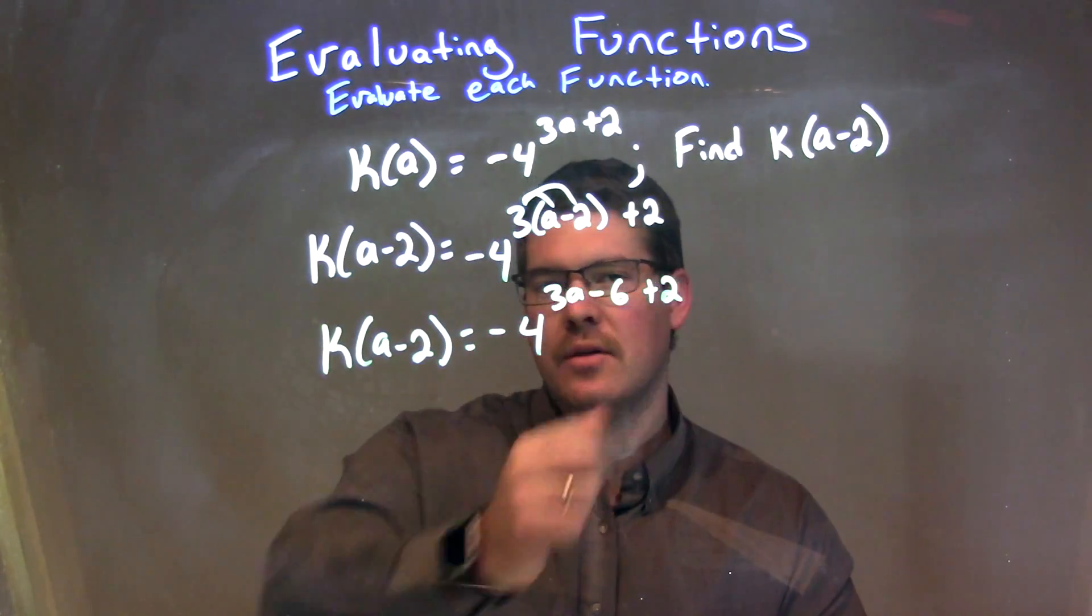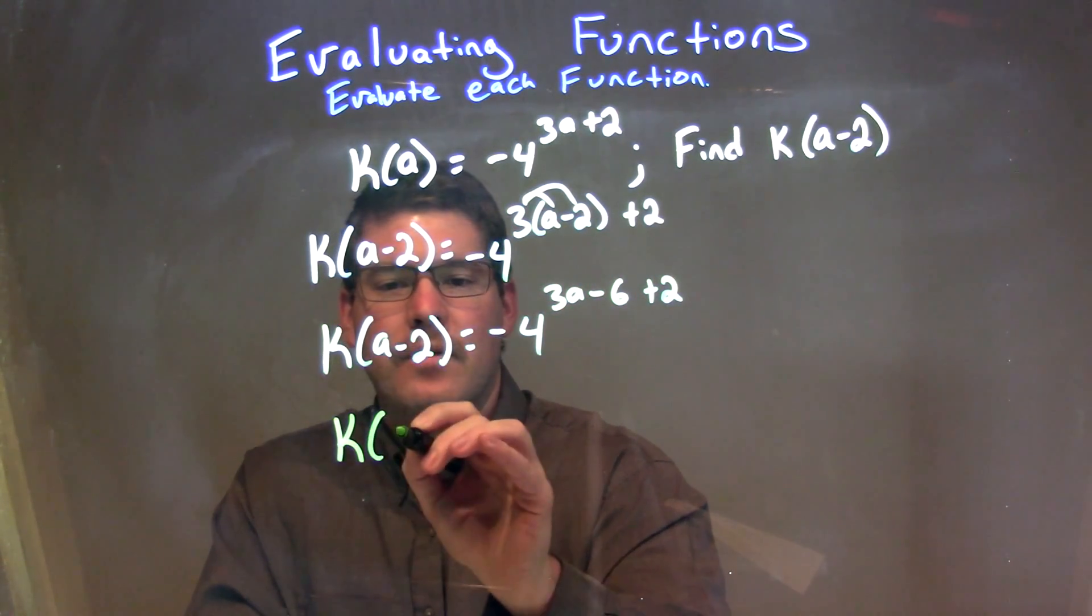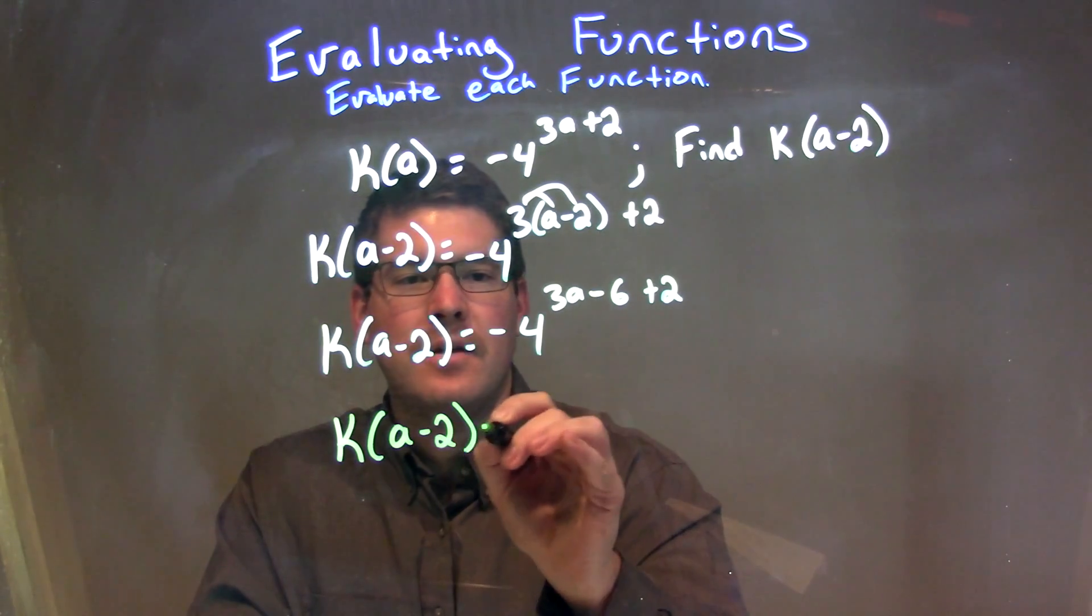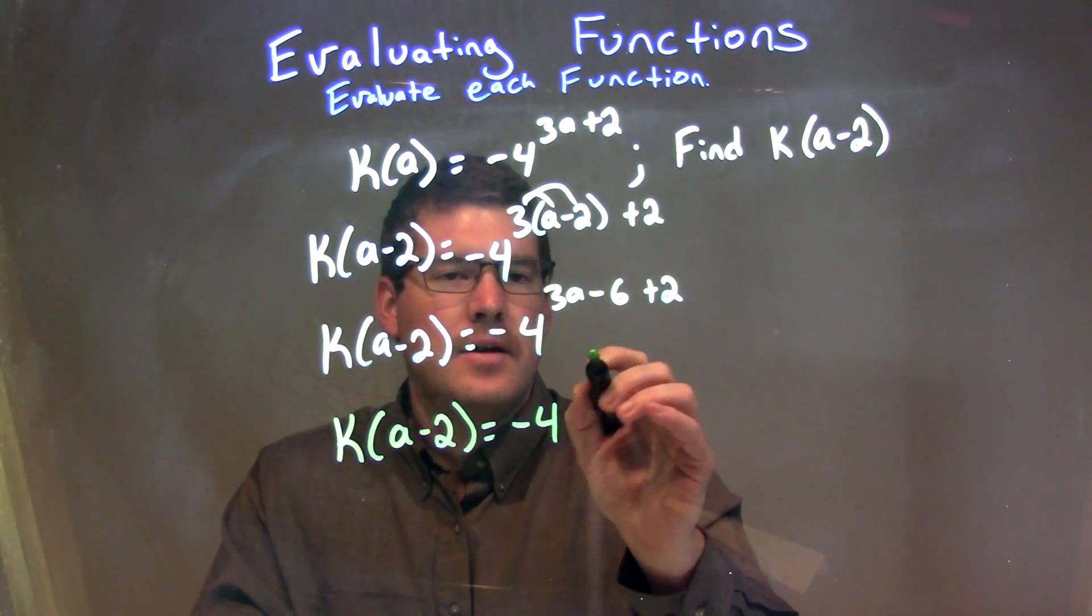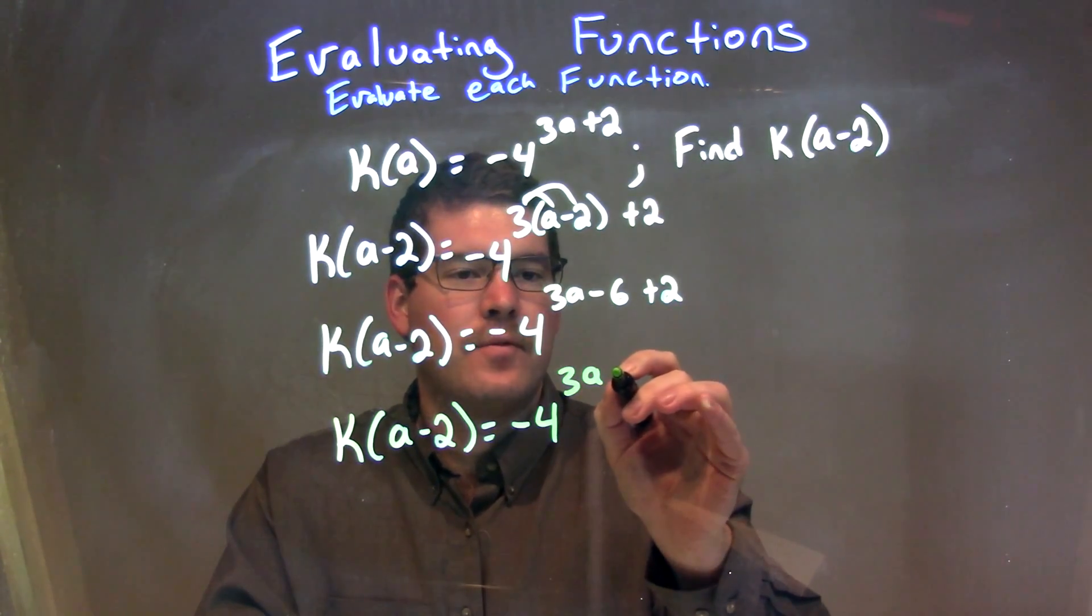Now we need to simplify that exponent a little more, combine the negative 6 and the positive 2. So, we have k of a minus 2 is equal to negative 4 to the power of 3a, and then minus 6 plus 2 is a minus 4.